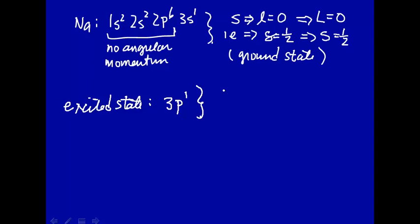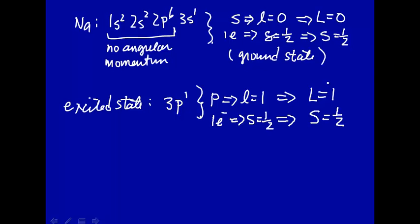If we do the same sort of analysis there, a p orbital implies that l=1. And since we have a single electron, we can say that capital L=1. If we have one electron, that implies that s=1/2. Since we only have one electron, capital S=1/2.